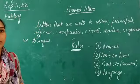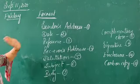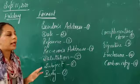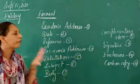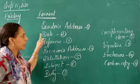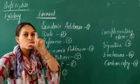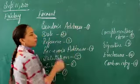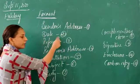Next is the format of the letter — how we are actually going to write it. This is the format you need to follow for a formal letter. The first point is the sender's address: the address of the person who is writing the letter.